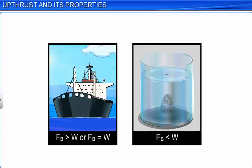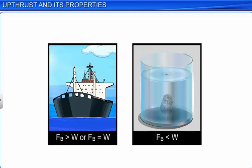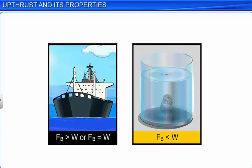This upthrust determines whether the body floats or sinks in a fluid. If FB is greater than W, or FB is equal to W, then the body will float. But if FB is less than W, then the body will sink.